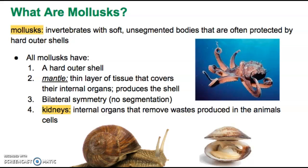Just like our worms, mollusks have bilateral symmetry. We are dealing with a more complex organism here, so mollusks, in addition to having bilateral symmetry, a shell, and a mantle, also have a specific organ called a kidney. You and I have kidneys too — they're internal organs that remove waste produced in animal cells. Our kidneys filter our blood and remove any waste products or toxins, then excrete those from the body through the urinary system.